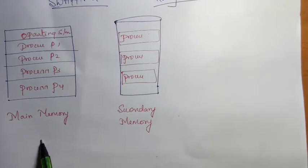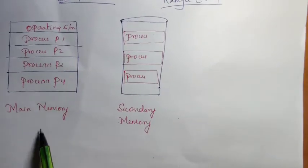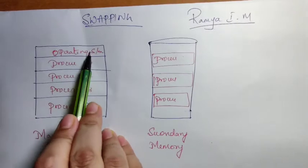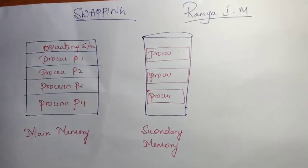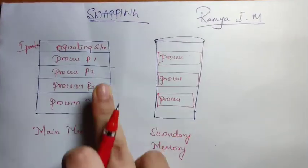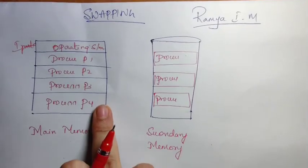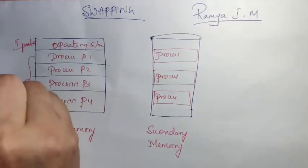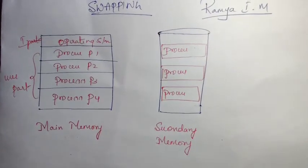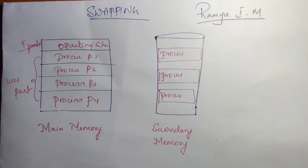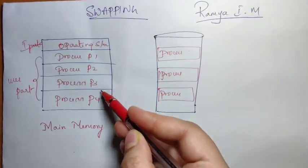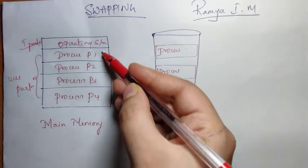In a multiprogramming system, we divide the main memory into two parts. The first part stores the operating system, whereas the second part stores the user processes. The user part is further divided into various partitions in order to store the processes P1, P2, P3, and P4.